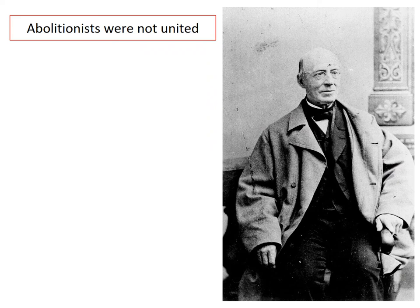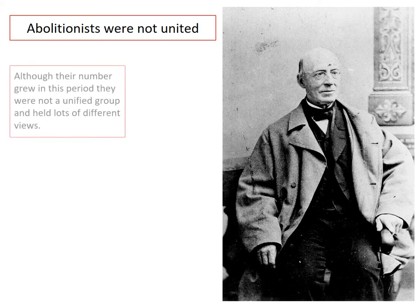The second reason why opposition in this period doesn't work and doesn't succeed is that abolitionists were not united. Abolitionists are people that want to abolish and get rid of the slave trade. Their numbers were growing, but they weren't a unified group and they held lots of different views.